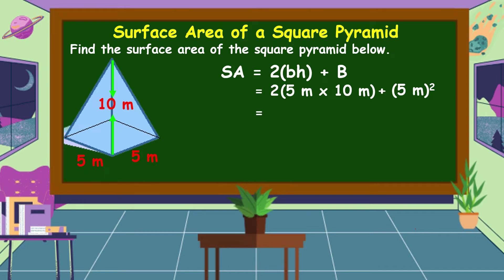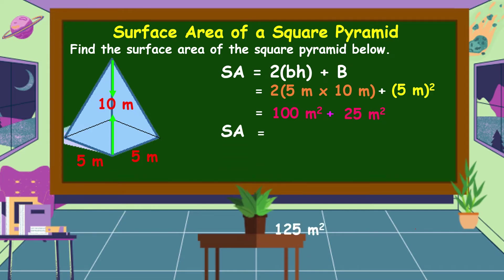Solving: 5 m × 10 m = 50 m² × 2 = 100 m². The area of the base is 5² = 25 m². Adding: 100 m² + 25 m² = 125 m². This is the surface area of this square pyramid.